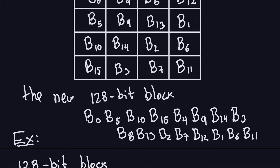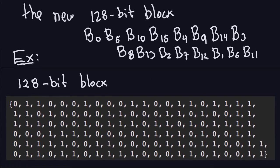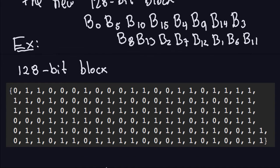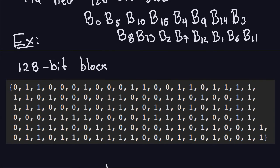The new arrangement gives us b0, b5, b10, and so on — remember all of these B values are bytes, or 8 bits each. As an example, you start with this 128-bit block and apply the shift row operation. The first thing you do is partition this 128-bit block into bytes: the first byte is the first eight bits, the second byte is the next eight bits, and so on.